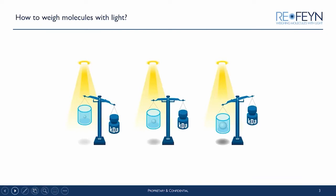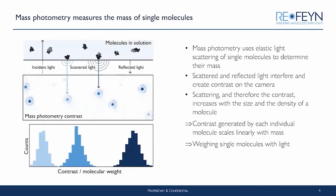So what is mass photometry? Essentially, it is using light to weigh molecules, and the working principle is very simple. All molecules scatter light and we can measure this scattering. Furthermore, molecules of different mass scatter light to different degrees — a small, lighter molecule will scatter less than a larger, heavier molecule. And it has been proven that there is a nice linear relationship between that signal and mass.